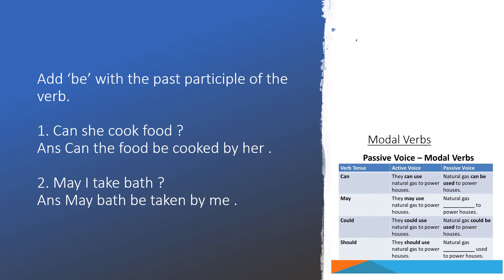Active and passive voice related to modals: if we have a modal verb like can, may, could in the sentence, we add 'be' with the past participle of the verb without changing the form of the modal. They can use natural gas to power houses — Natural gas can be used to power houses. They may use natural gas — Natural gas may be used to power houses. They could use natural gas — Natural gas could be used to power houses.